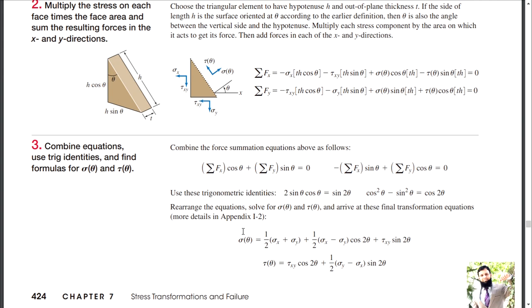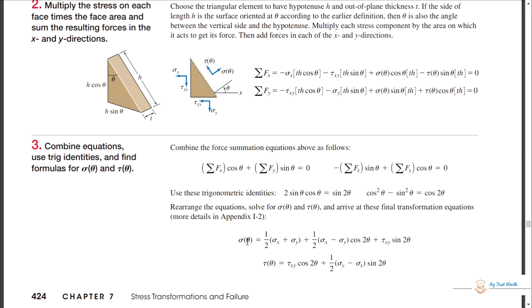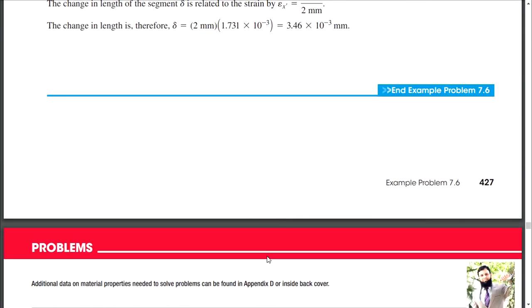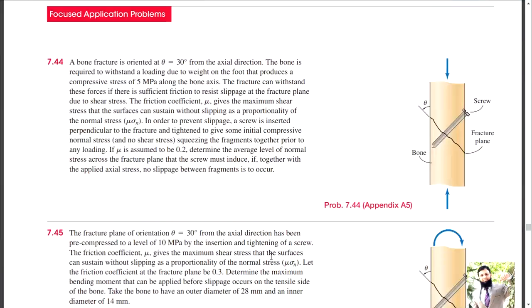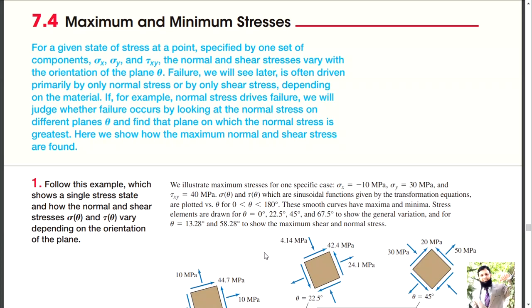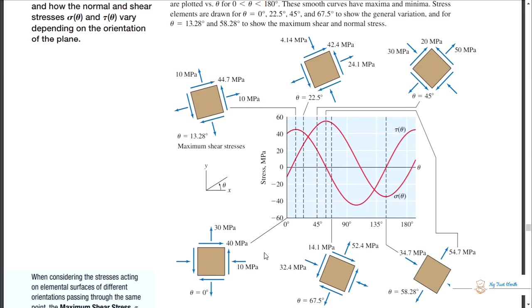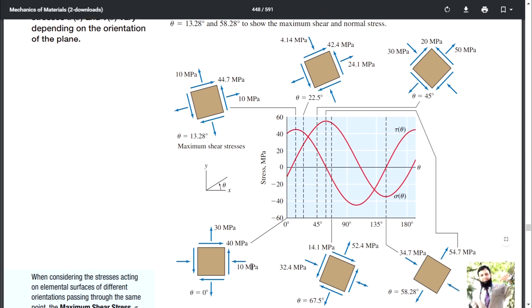These are your combined resultant stresses which are applied, and with the change in orientation angle you will have different values of axial stresses and different values of shear stresses. When you have different values for shear and axial stresses at different orientations, the magnitude of stresses in your stress block changes. This is the effect of stress transformation.